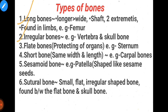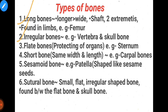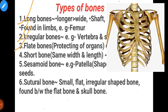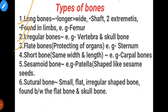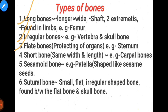Irregular bones: these do not have any specific defined shape. They can have any shape. Flat bones: these are thin and broad. They protect our organs and heart.